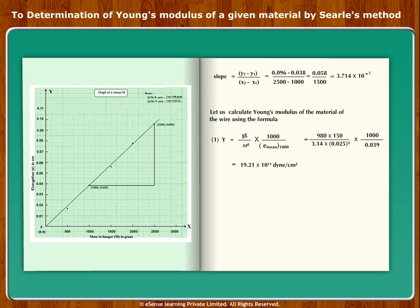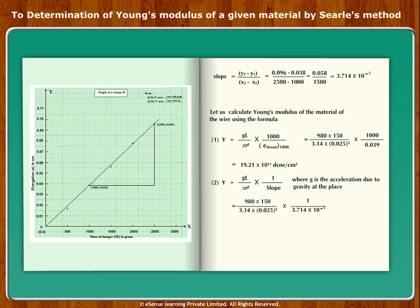This is equal to 19.21 into 10 raised to 11 dyne per centimeter square. Formula 2: Y equals gL upon pi r square into 1 upon slope, where g is the acceleration due to gravity. This equals 980 multiplied by 150 upon 3.14 into 0.025 square multiplied by 1 upon 3.714 into 10 to the power minus 5, which is equal to 19.71 into 10 to the power 11 dyne per centimeter square.